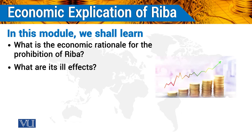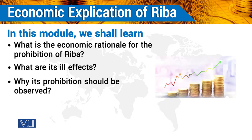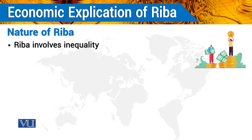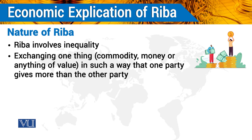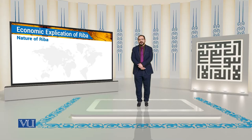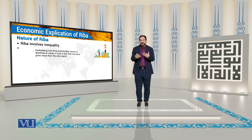We would also be looking at why the prohibition of RIBA should be observed. Regarding the nature of RIBA, in a previous segment we looked into the definition of RIBA and said that any exchange which involves inequality of exchange of one asset would involve RIBA.